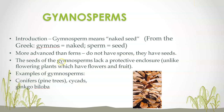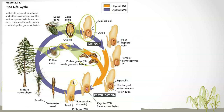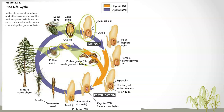Gymnosperms literally mean naked seed. Examples include conifers (pine trees), cycads, and ginkgo biloba, which is rarer. Here's the life cycle: starting with seeds or pollen — male gametophytes are pollen grains; you have the female gametophyte. Fertilization happens via a pollen tube, which delivers sperm to the egg. The egg and zygote form after fertilization. Then the embryo, germinated seed, seedling — and after years and years you get that huge pine tree, the conifer, which then produces gametophytes.